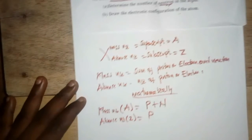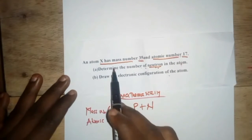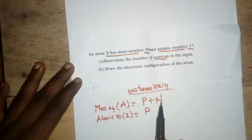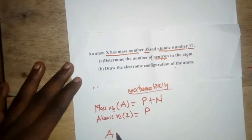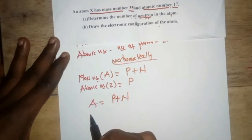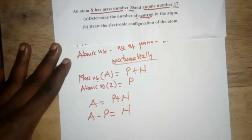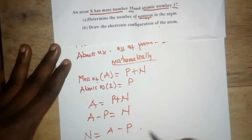The atomic number is the number of protons. Since the question asks us to determine the number of neutrons, we rearrange the formula. From A equals protons plus neutrons, we make N the subject: N equals A minus Z, so the number of neutrons equals A minus the atomic number.